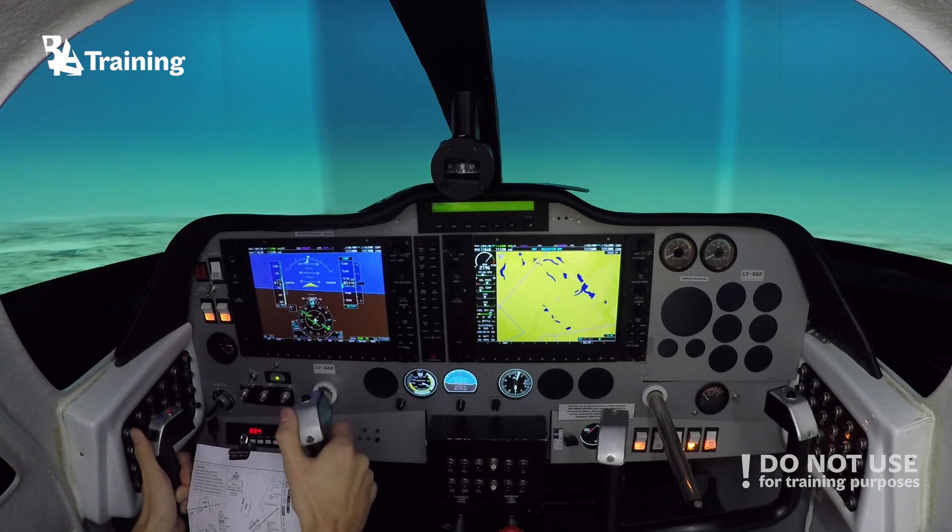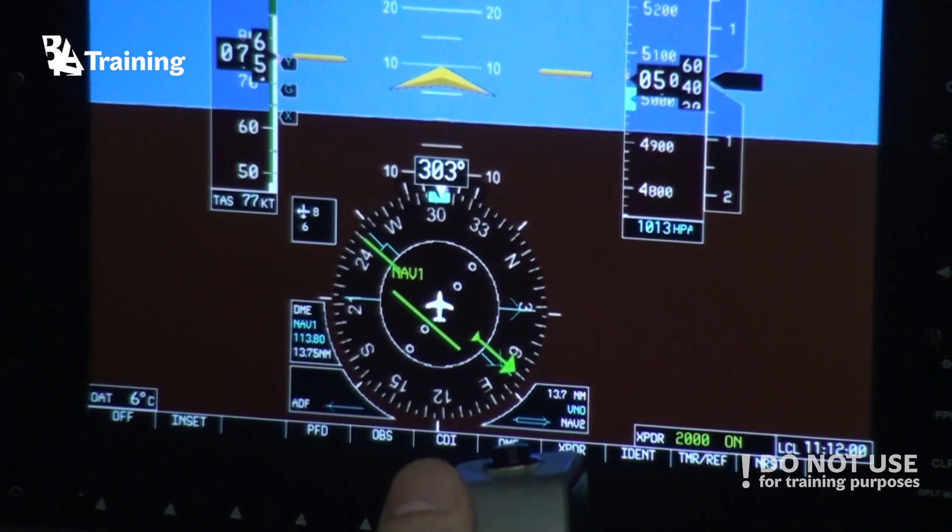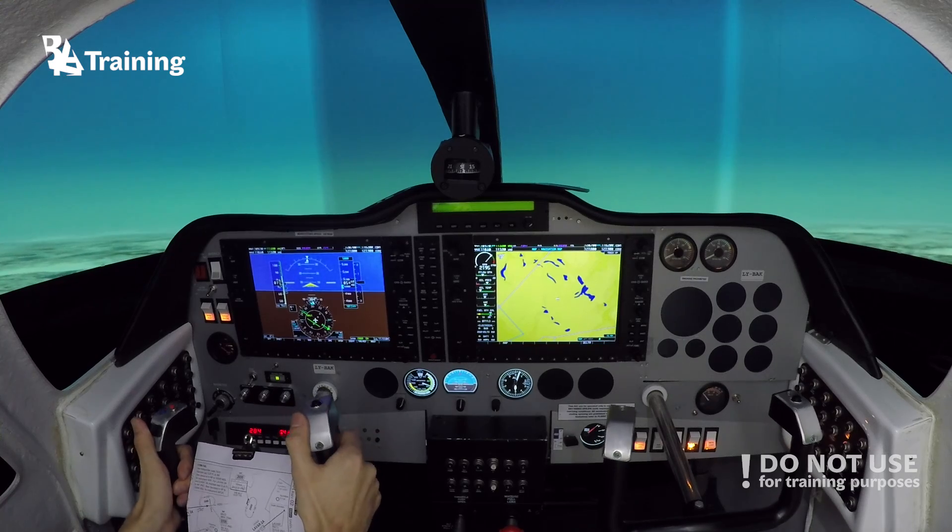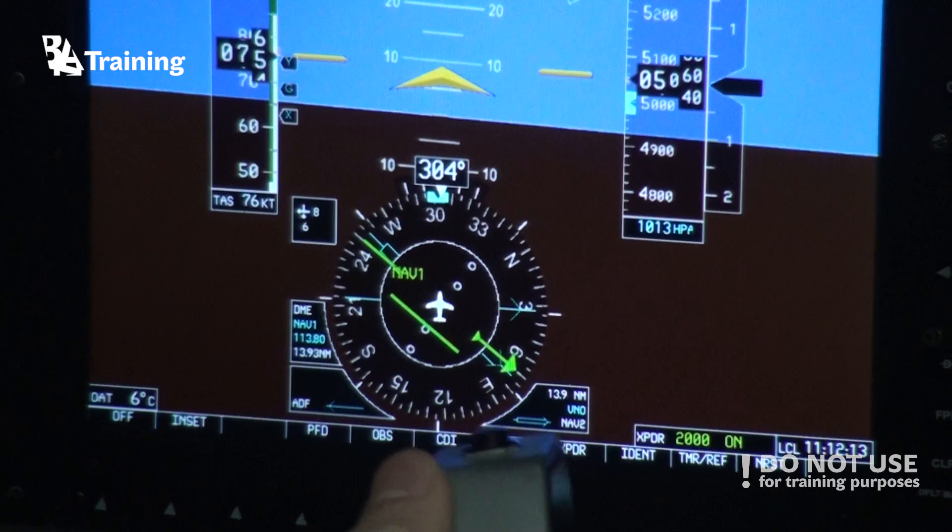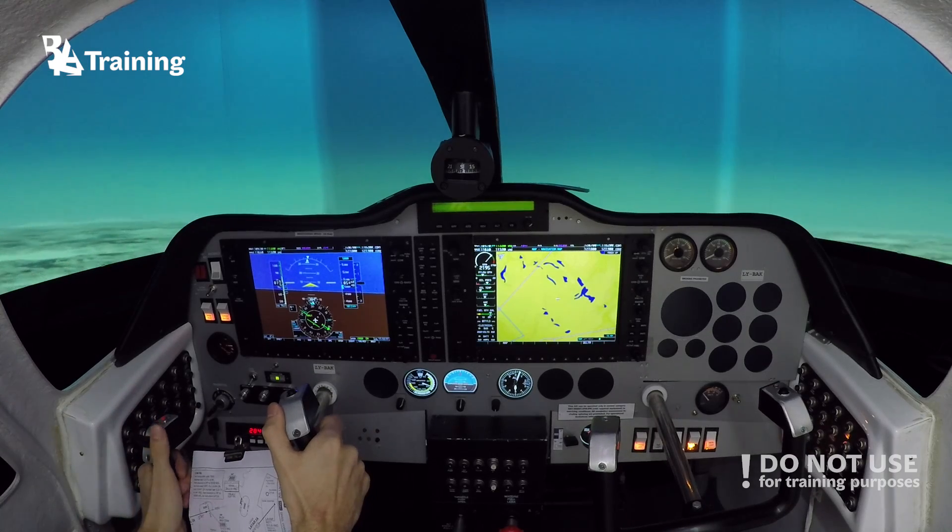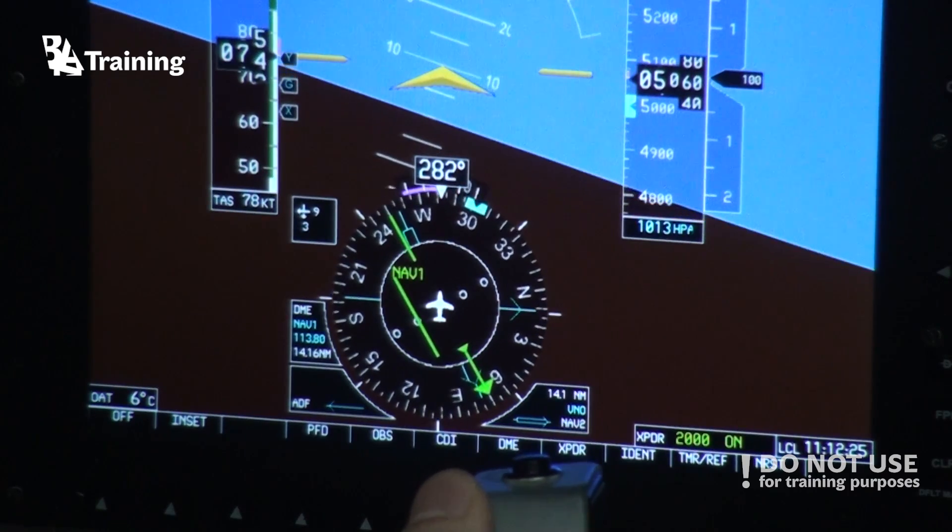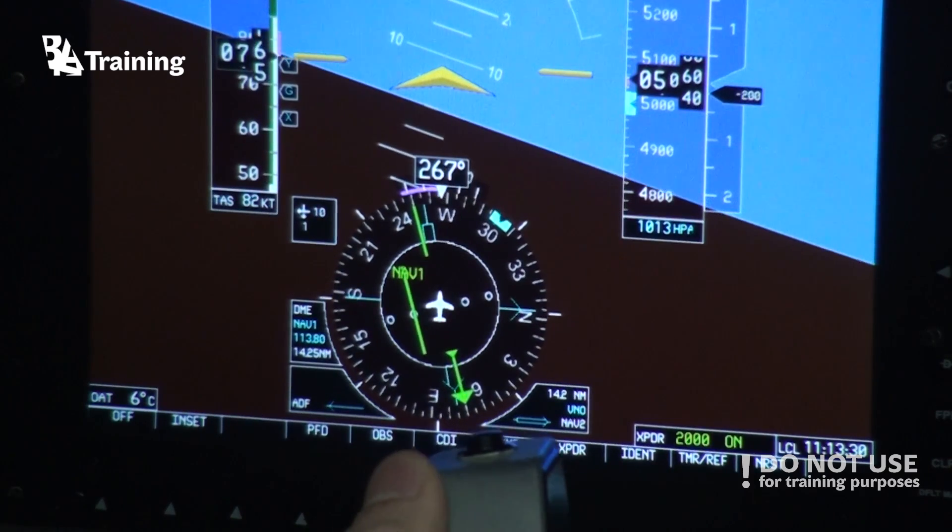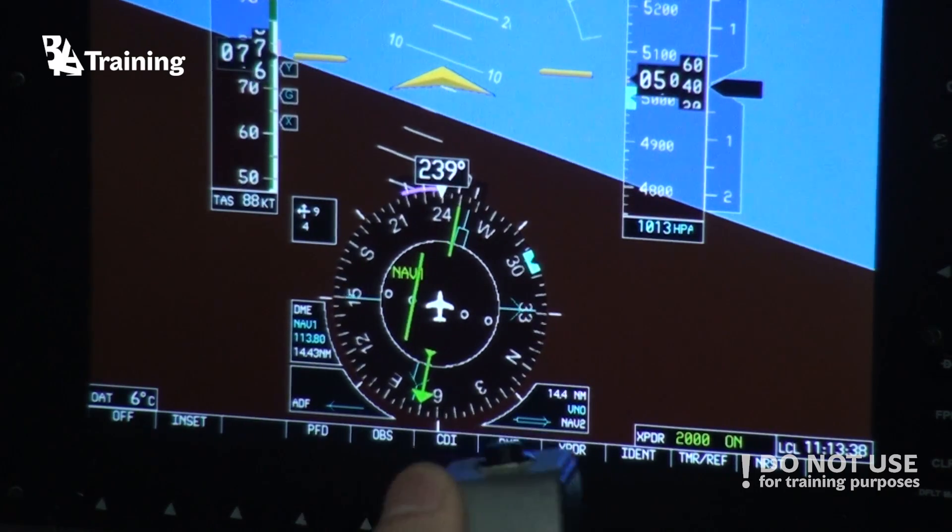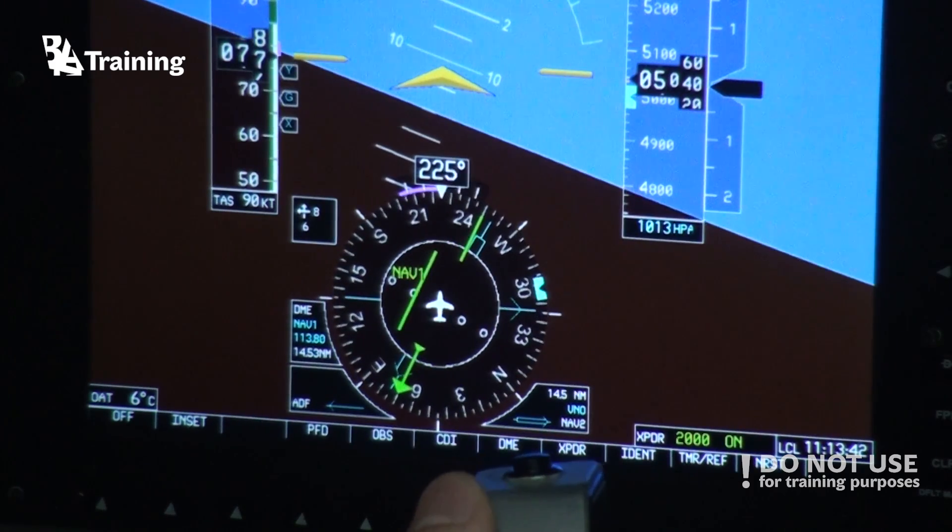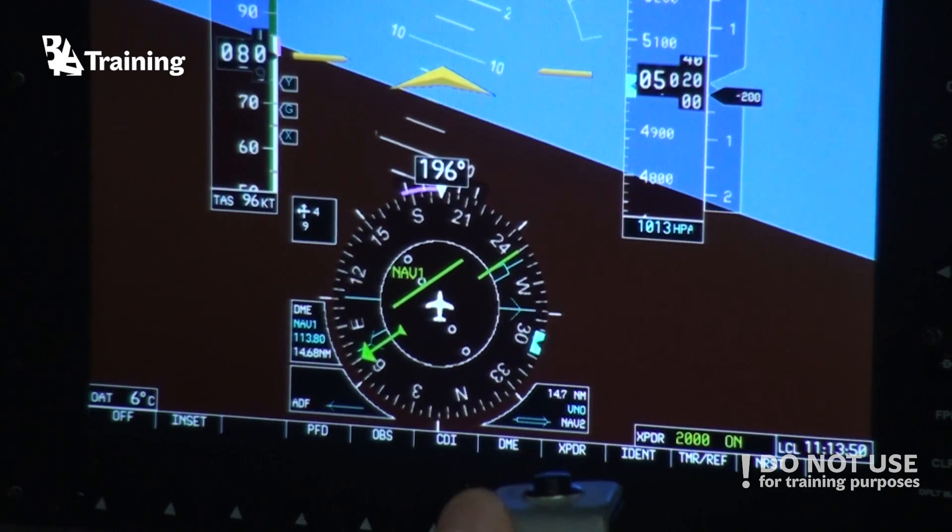I started the timer a little bit late so we can remove five seconds. It's on 45 now, so 10 seconds more. 55, starting the turn towards the inbound. We should intercept the radial and we have to approximate the distance and speed towards the radial so that we don't overshoot or undershoot it to make it look good.